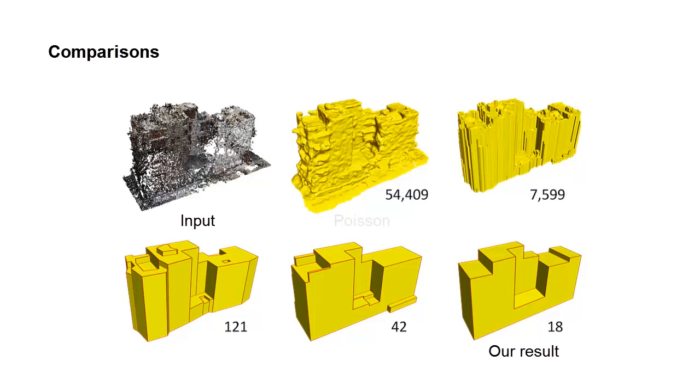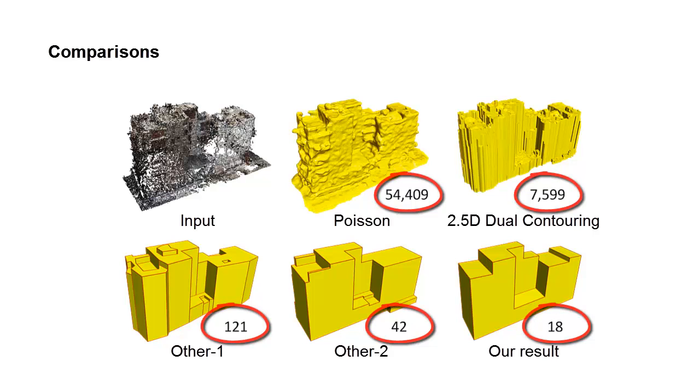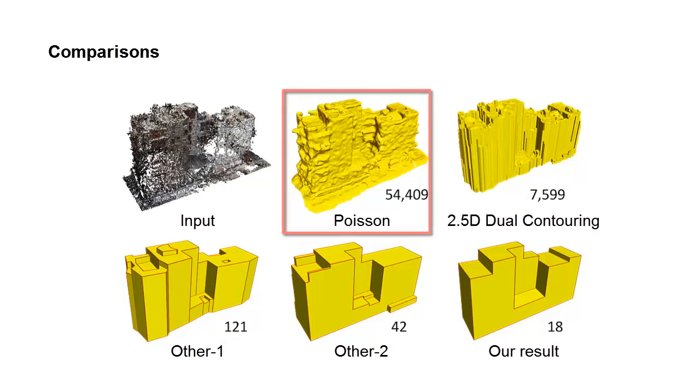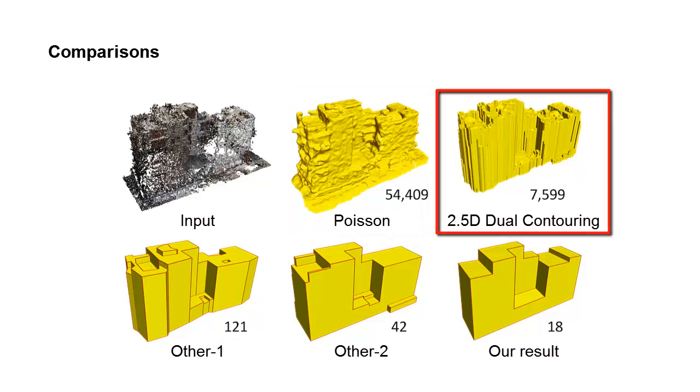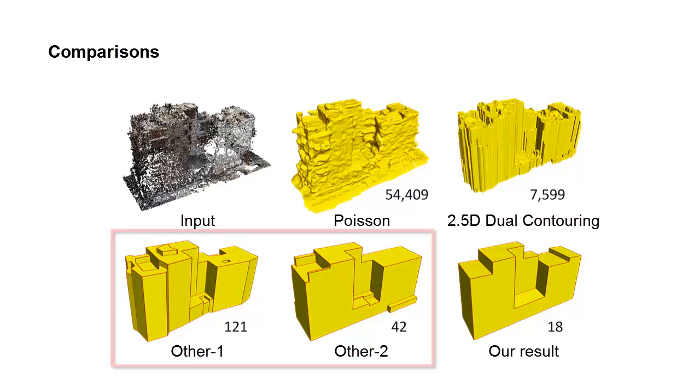We compare our approach with four other methods: Poisson surface reconstruction, 2.5D dual contouring, and two other methods that aim at reconstructing lightweight polygonal surface models. Here the number under each model indicates the total number of faces. We can see that both Poisson and 2.5D dual contouring generate dense surfaces with a large number of faces. The other two methods can produce lightweight models, but their results contain undesired structures.